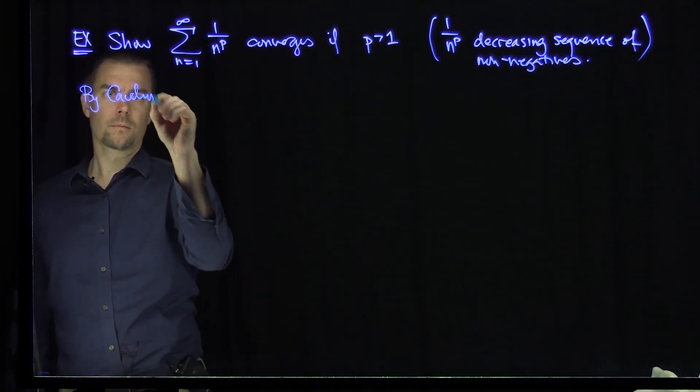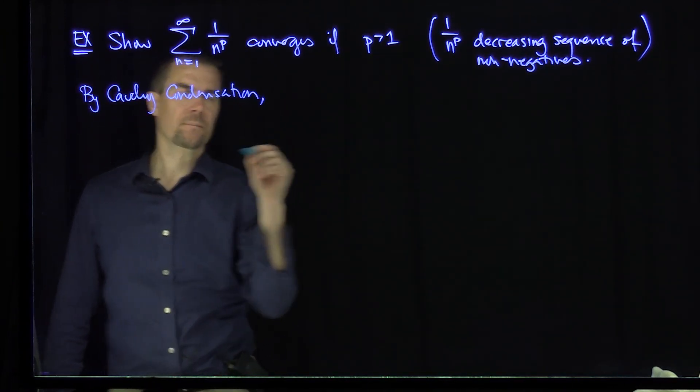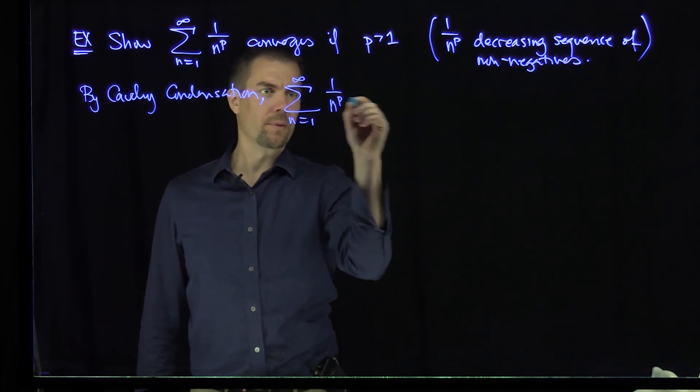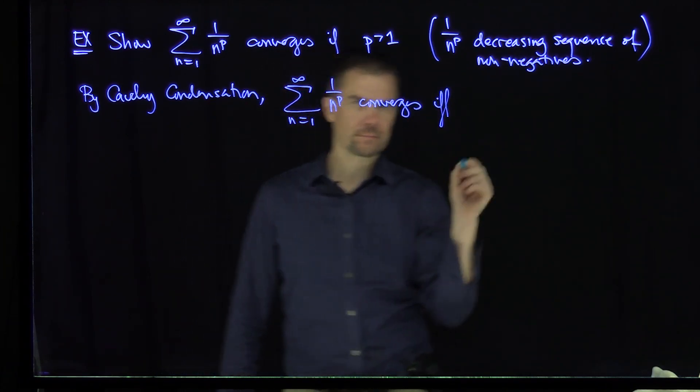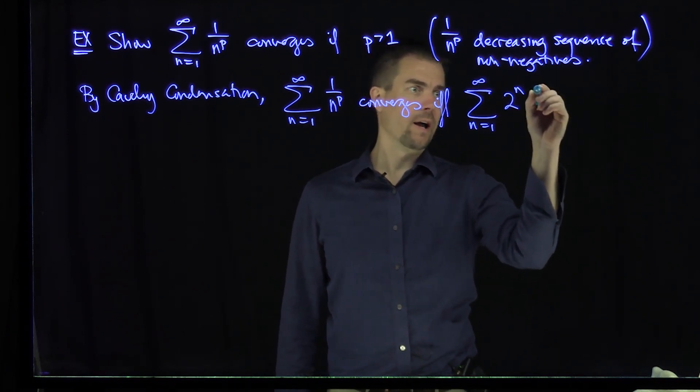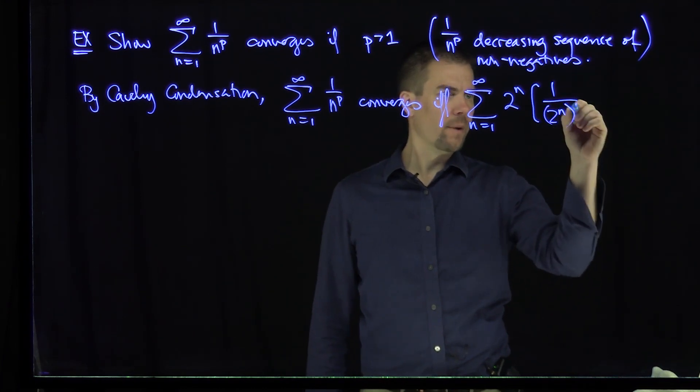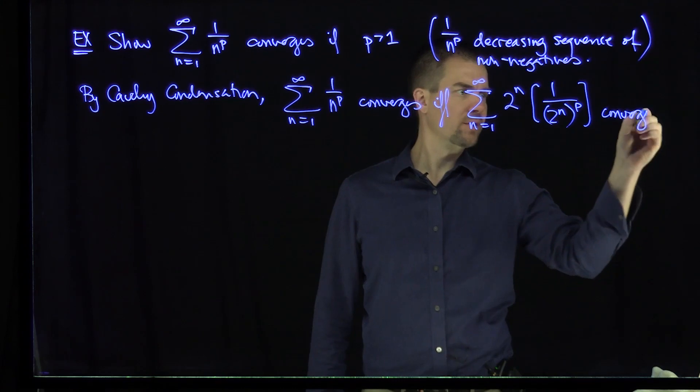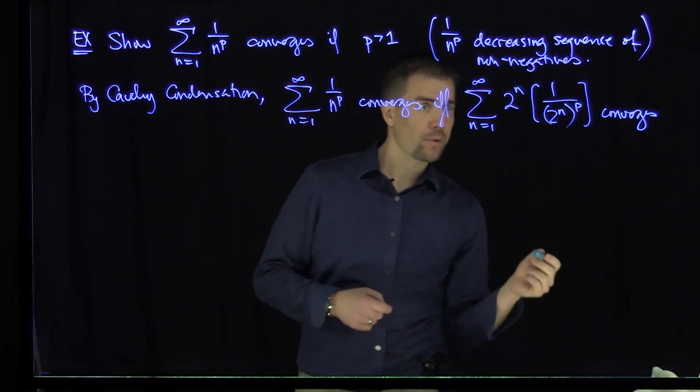So by Cauchy Condensation, the sum n goes from 1 to infinity of 1 over n to the power p converges if and only if the sum n goes from 1 to infinity of 2 to the power n times 1 over 2 to the power n to the power p converges. In other words, we replace all of the n's with 2 to the power n's.